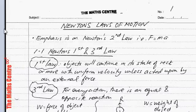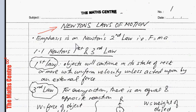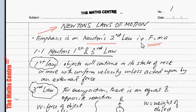In this chapter we are going to be looking at Newton's laws of motion. The emphasis is on Newton's second law and we will be using the formula F equals MA quite a bit, which is derived from Newton's second law. Before we go to this important formula and talk about it in detail, let's talk about Newton's first and third law.